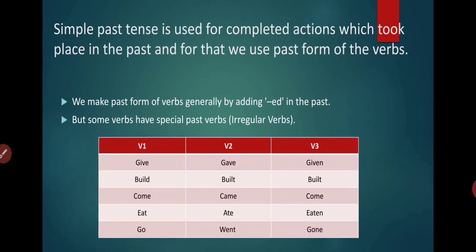Come, came, come. Eat, ate, eaten. Go, went, gone. So in the last one, as you can see, go, went and gone. We cannot add ed. Even in any one of them, we cannot add ed. So all these are irregular verbs. Second form of verbs are irregular.